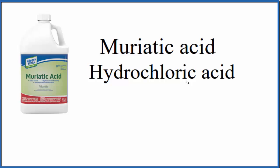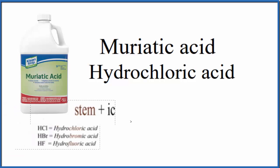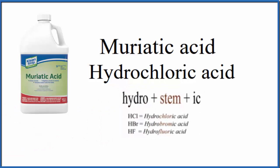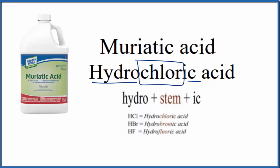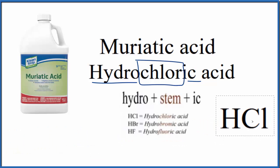To write the formula for hydrochloric acid, we can use this rule here. When we have 'hydro' in the stem with 'ic,' — so we have 'hydro' and 'chlor' and then 'ic' — that means it's a binary acid. So we would have H for hydro, and then the element, which in this case is chlorine. That gives us HCl for hydrochloric acid.